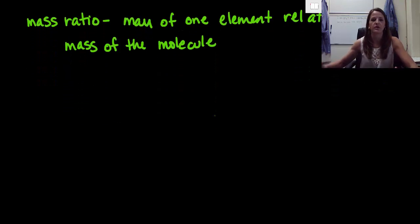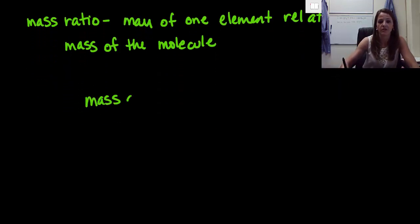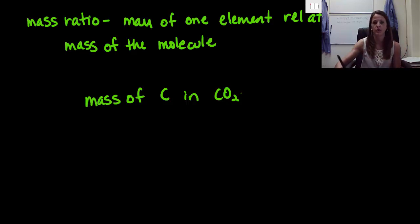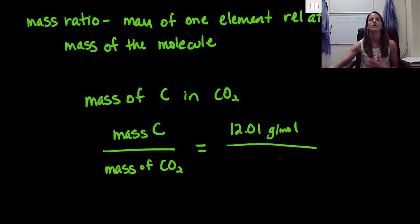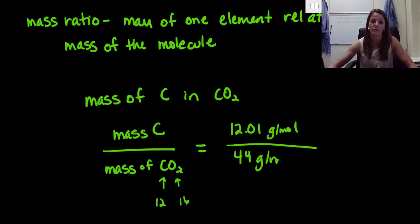Basically, it is just the mass of one element relative to the mass of the molecule. So the best way to do this is just by working an example. Let's say we are trying to determine the mass of carbon in carbon dioxide. So essentially what we need to do is say the mass of carbon divided by the mass of carbon dioxide. So let's just plug these numbers in. We are going to use the atomic mass for carbon, so that is about 12.01 grams per mole. And we are going to divide that by the molar mass of our carbon dioxide. So to determine this, we simply just add up the atomic masses of each individual element. So we have about 12 grams of carbon. Each oxygen is about 16 grams. So 16 times 2 gives us about 32 plus 12 gives us an overall molar mass of about 44 grams per mole for our mass of carbon dioxide.